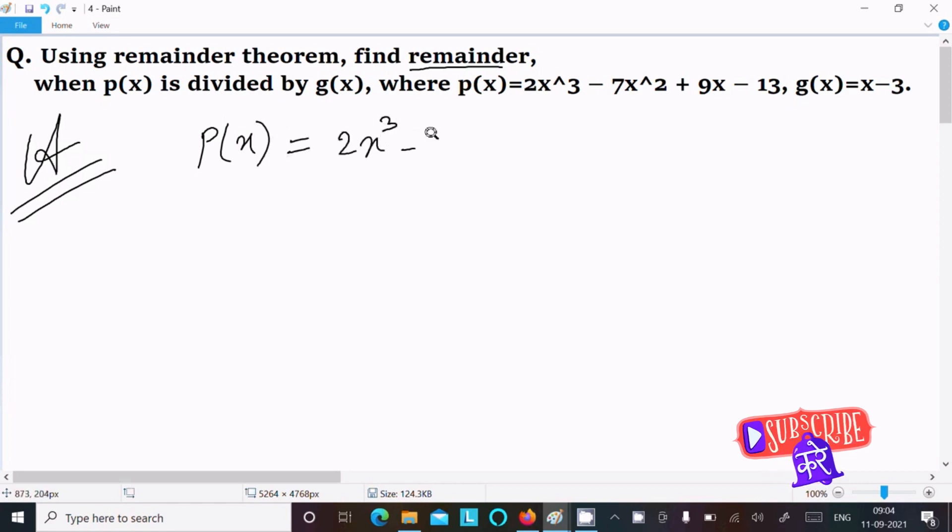minus 7x² plus 9x minus 13, and g(x) equals x minus 3.